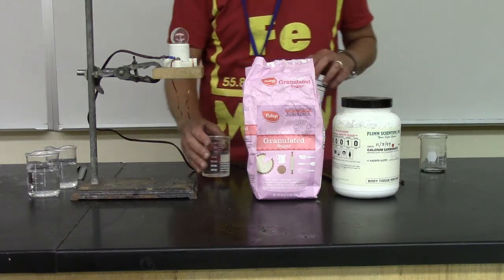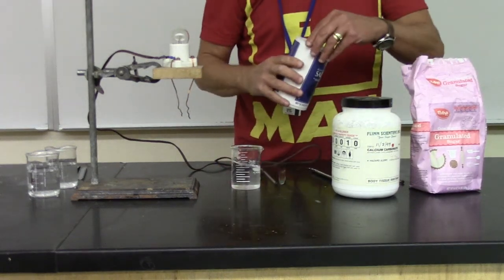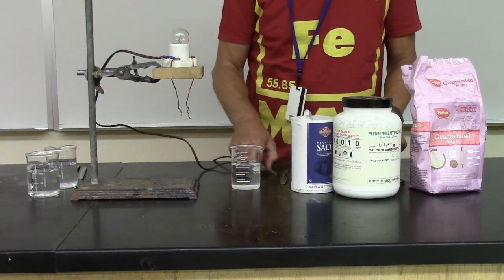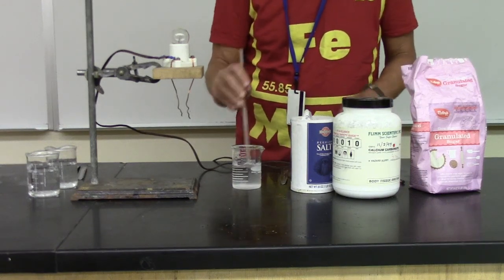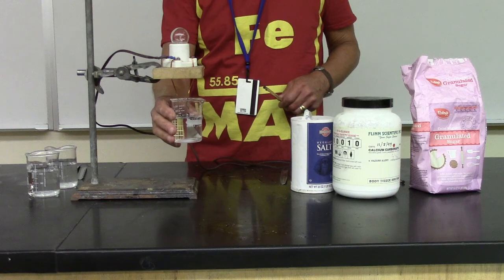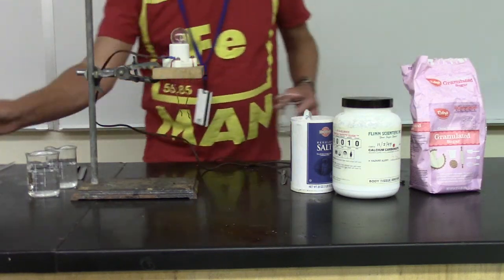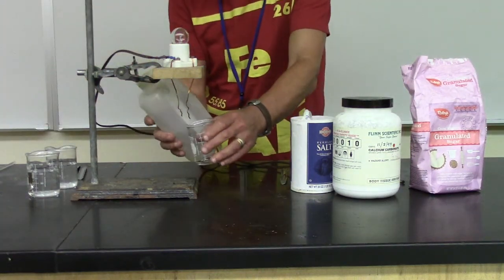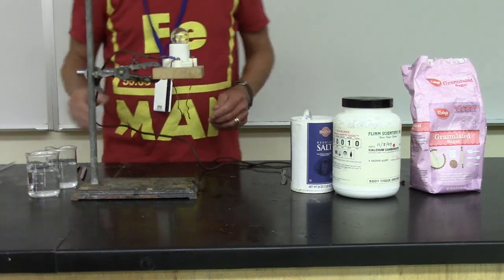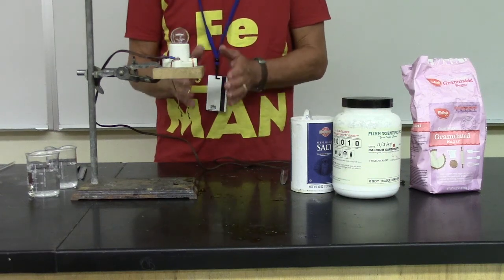But let's take something else, a very common material. Table salt, better known as sodium chloride. Let's just put a little bit in there, and give it a stir. And let's test to see if it lights up. Look at that. The light bulb lights up very, very brightly. We're going to rinse this so you can see that what we call sodium chloride would be called a strong electrolyte, because a solution of it, when it dissolved, conducted electricity very strongly.